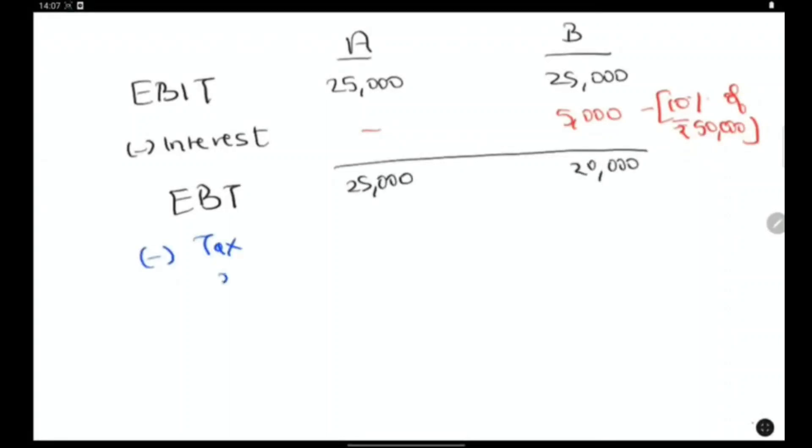From here you deduct tax at 30 percentage which is 7,500 in A's case and 6,000 in B's case leading us to an earnings after tax of 17,500 for A and 14,000 for B. Clearly you can see that B is paying a lower tax by rupees 1,500 than A.